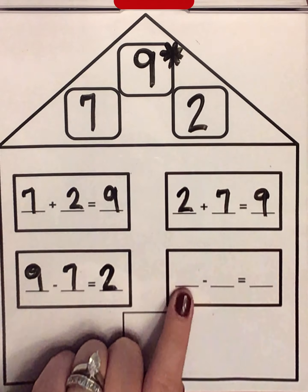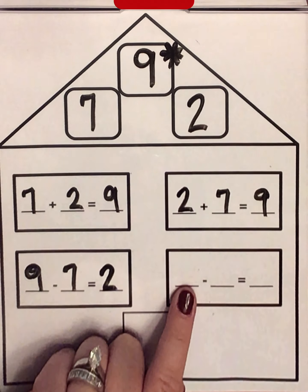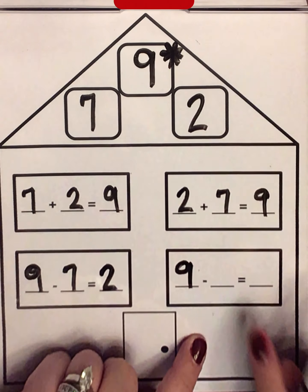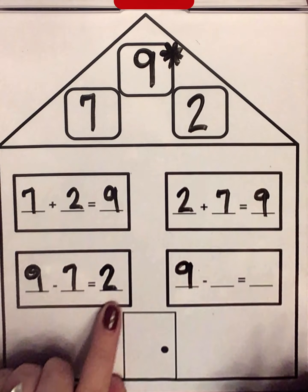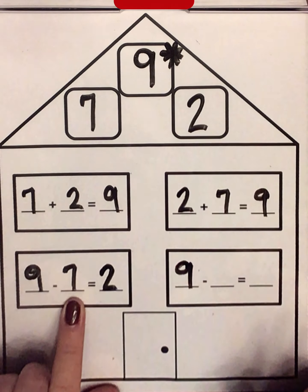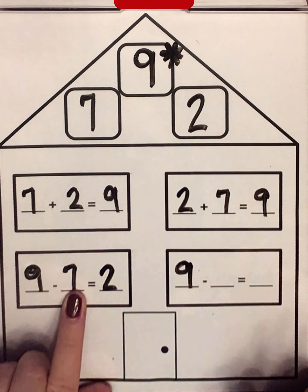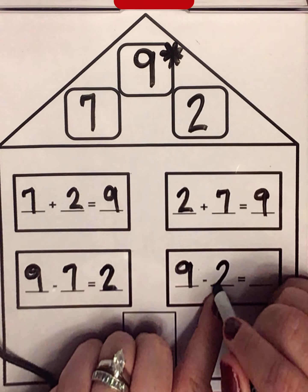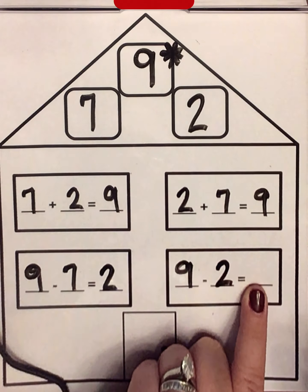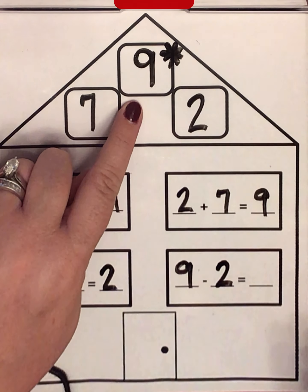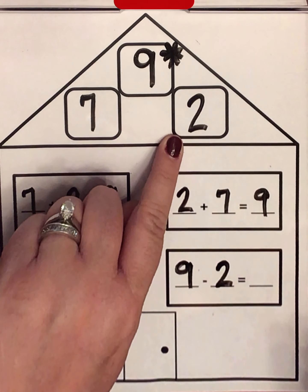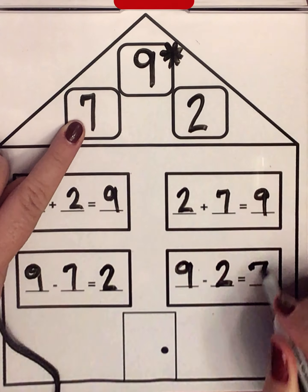Do you remember which number is going to go here? Which number goes in the front of a subtraction equation? If you said 9, you're right. Now, for this last subtraction equation, I am going to flip these two numbers. So instead of saying 9 minus 7, this time I'm going to say 9 minus 2. What number would go here? I've used the 9 and I've used the 2, so what's left? If you said the 7, you're right. Great job.